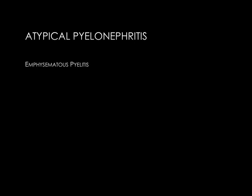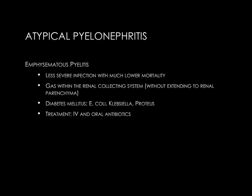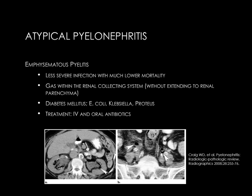To contrast with emphysematous pyelonephritis, emphysematous pyelitis is a gas-forming infection of just the renal pelvis. This is much less severe than emphysematous pyelonephritis and has a lower mortality. It's diagnosed by seeing gas within the renal collecting system that does not extend to the renal parenchyma. Again, typically these patients are diabetic and the causative agents are often E. coli, Klebsiella, or Proteus. Treatment is with IV and oral antibiotics. Two axial CT images show multiple small foci of gas within the collecting systems, and the right-sided image demonstrates gas also noted within the ureters.